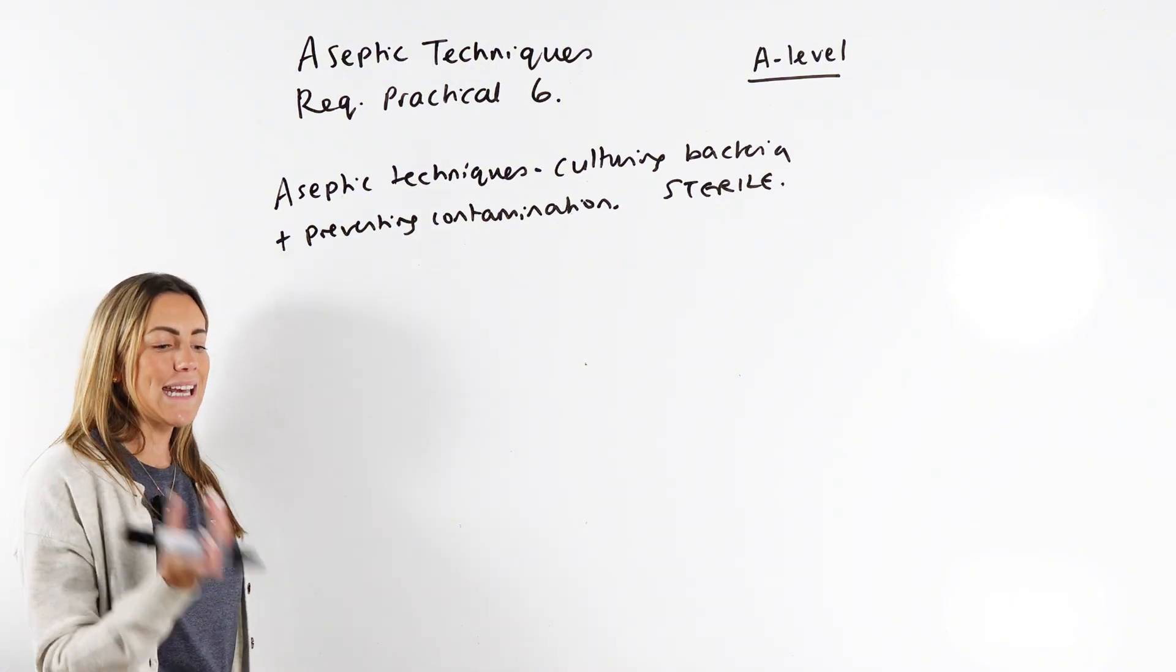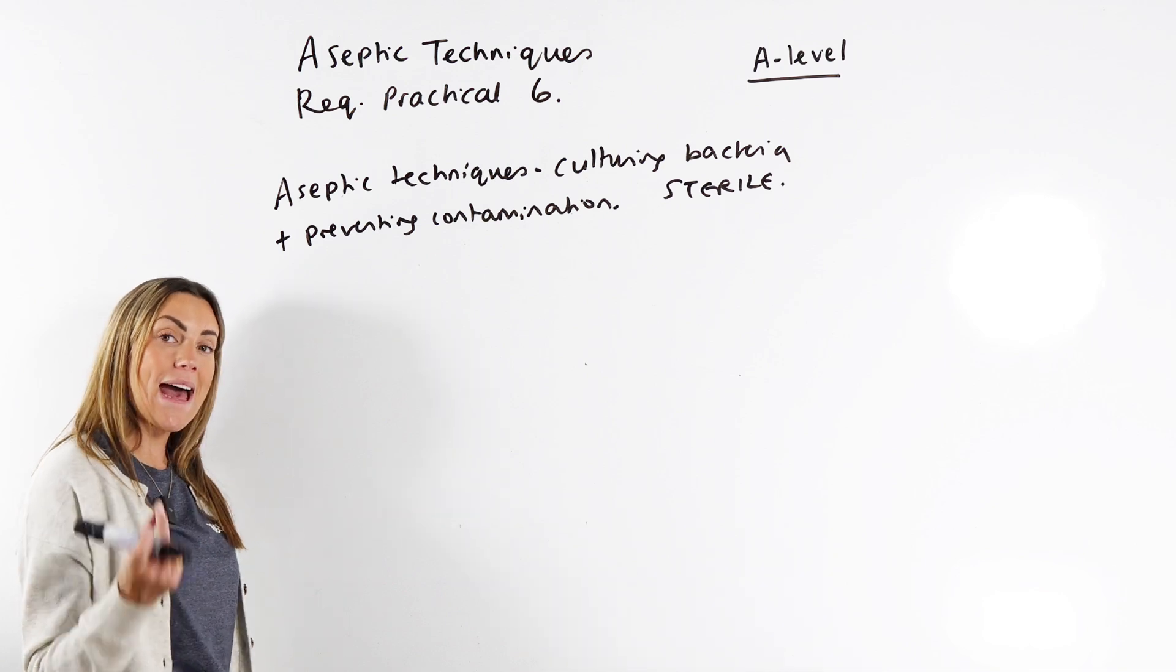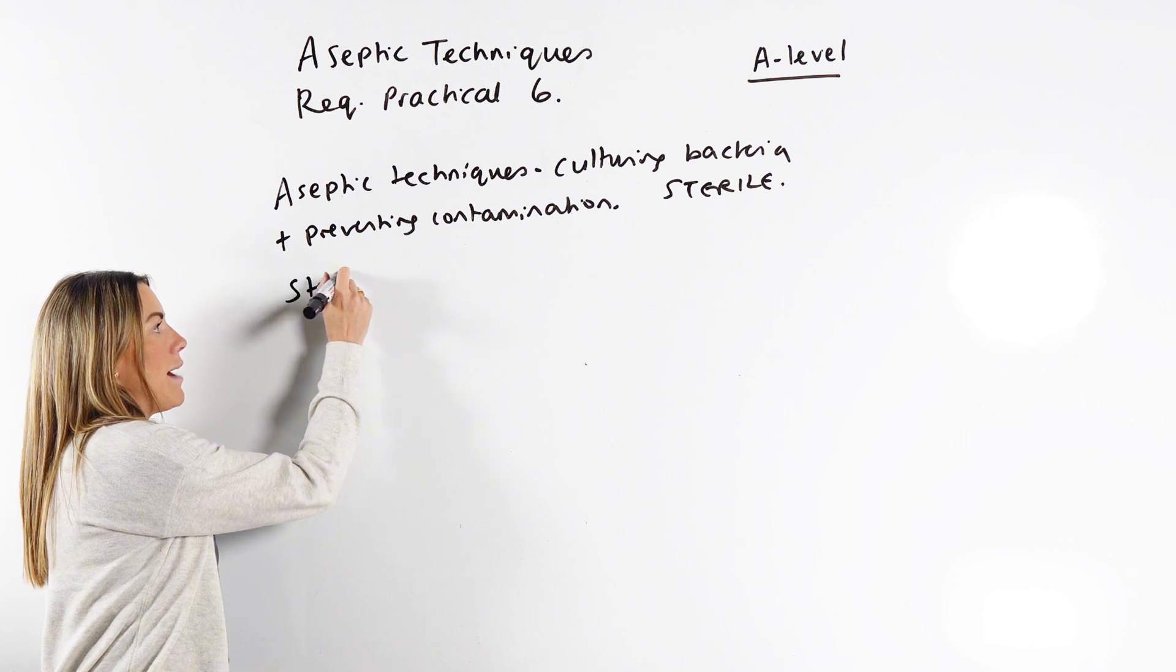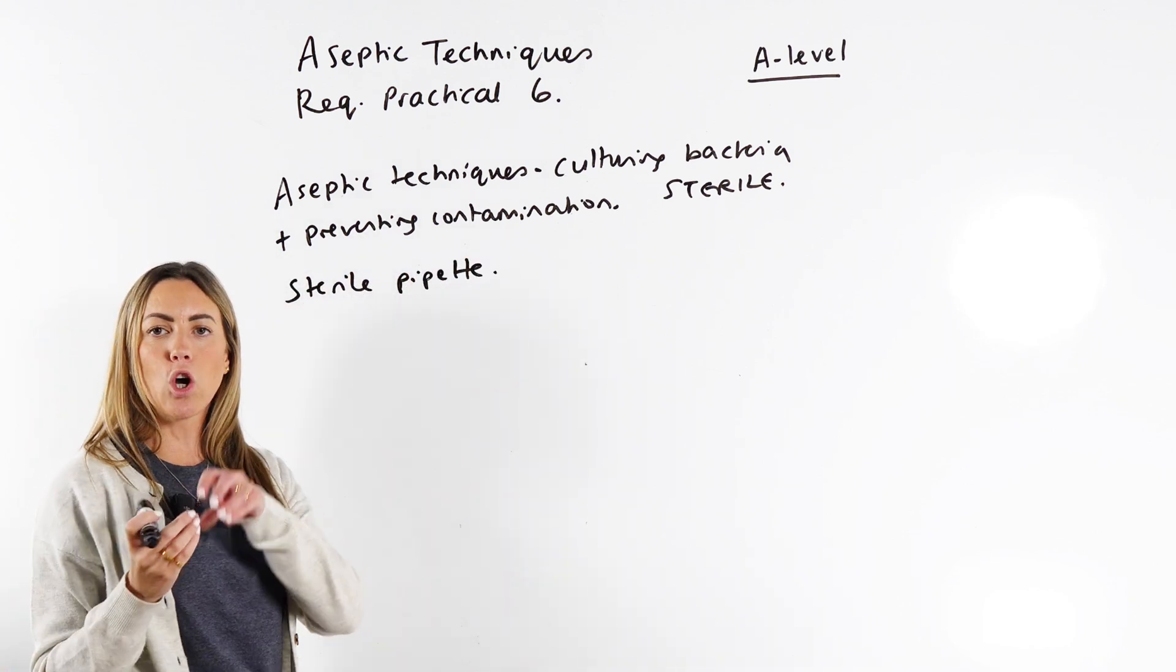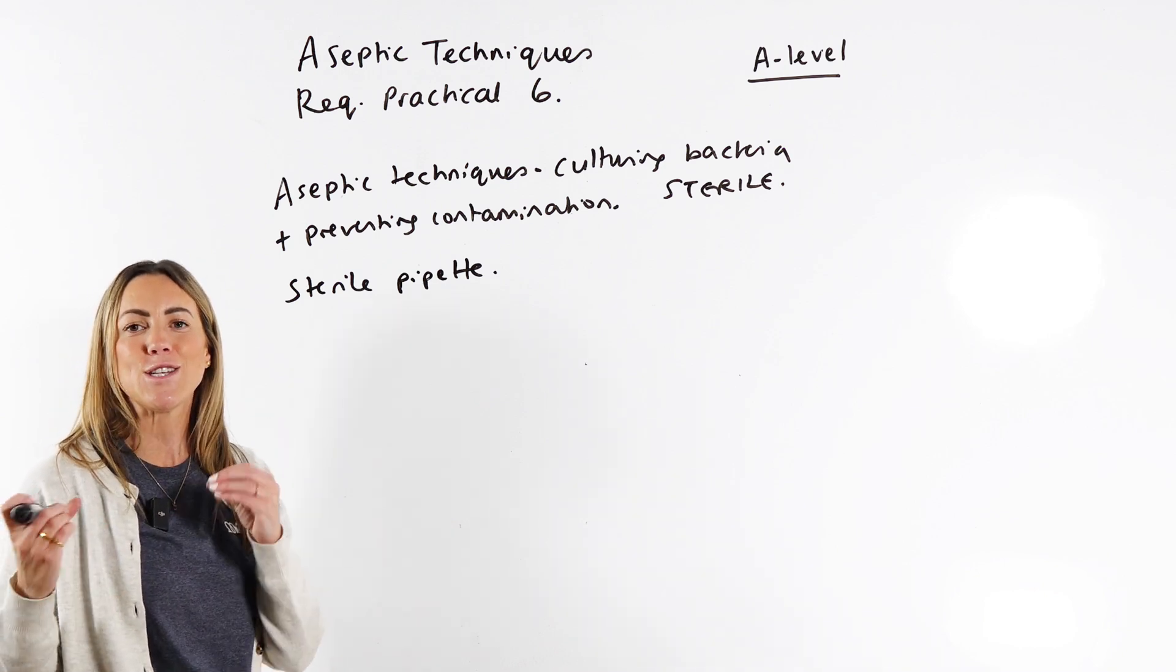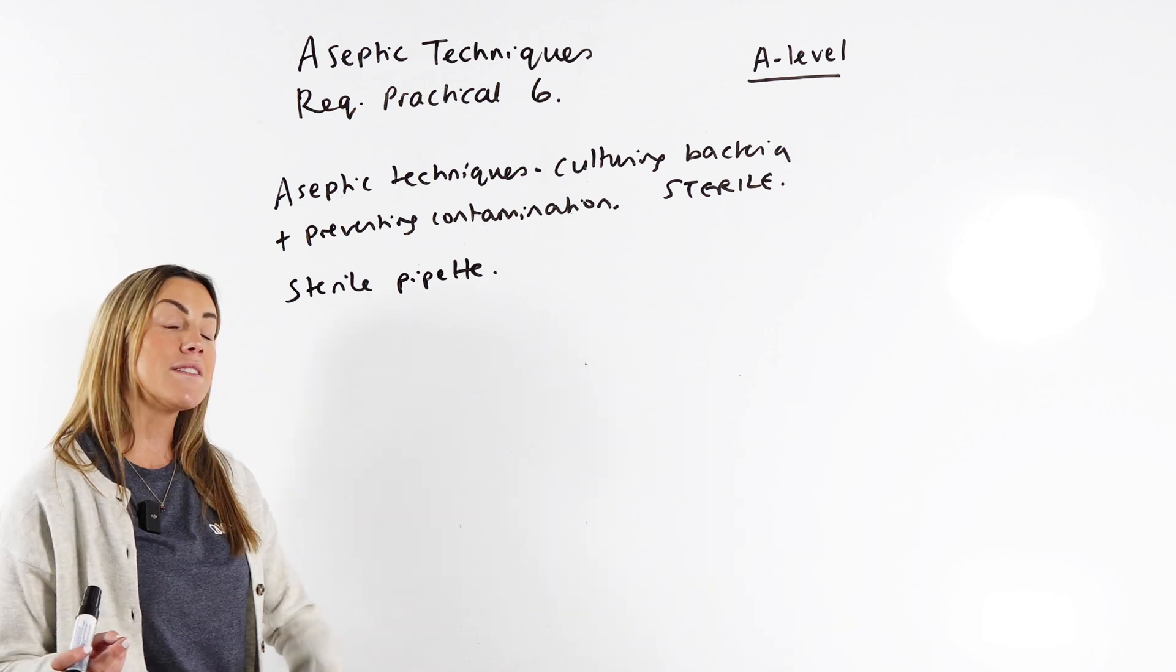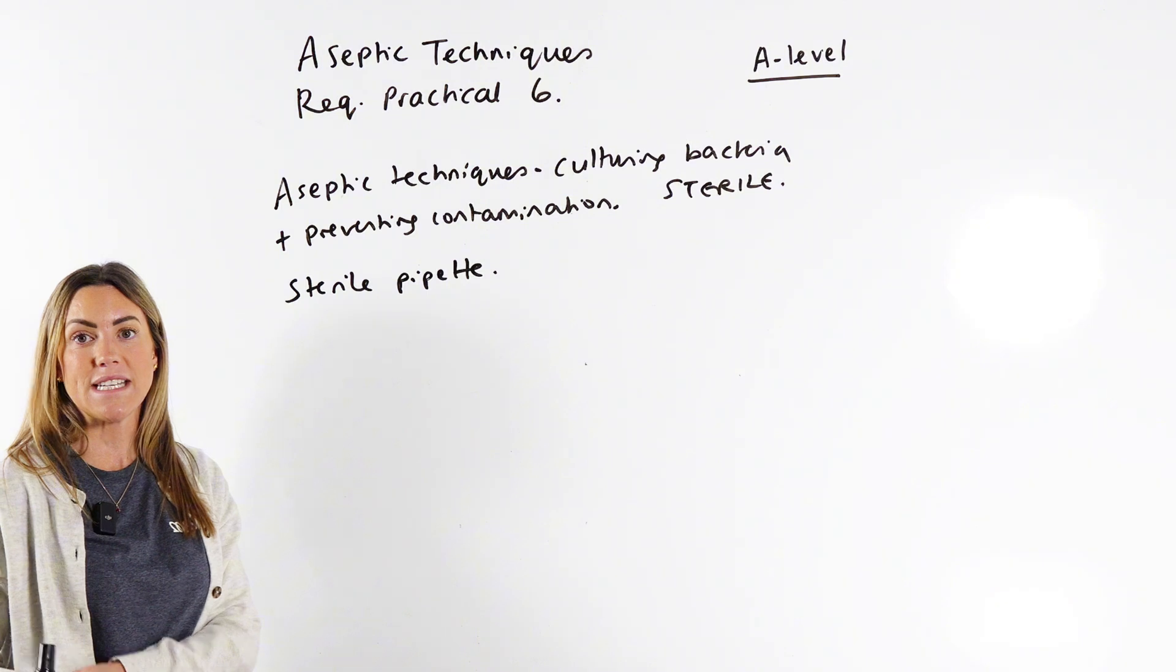If you've got a liquid culture of bacteria, you're probably going to use a pipette to take a set volume of that bacteria. In an exam, you'd refer to it as a sterile pipette. It will come in a plastic wrapper. You'll open it only when you need to use it. It will be pre-sterilised. You use it once and then you immediately discard it into a beaker of disinfectant.